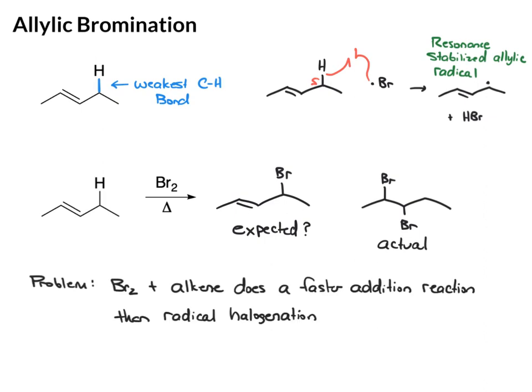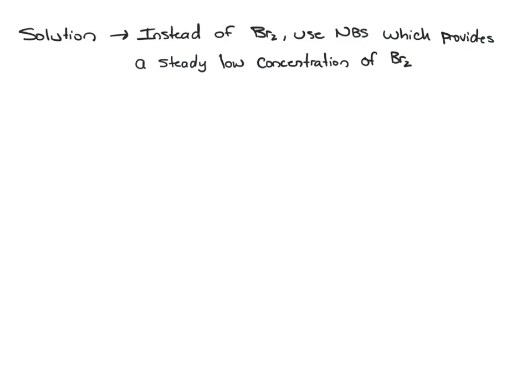There is a way around this problem, however. We can use a different reagent. Our solution to this problem is to use a reagent known as NBS. And what this does is instead of flooding the reaction with a bunch of bromine, this provides a steady but very low concentration of bromine to the solution.